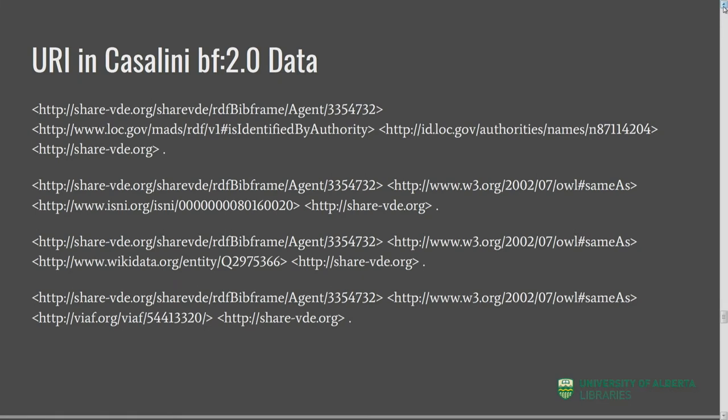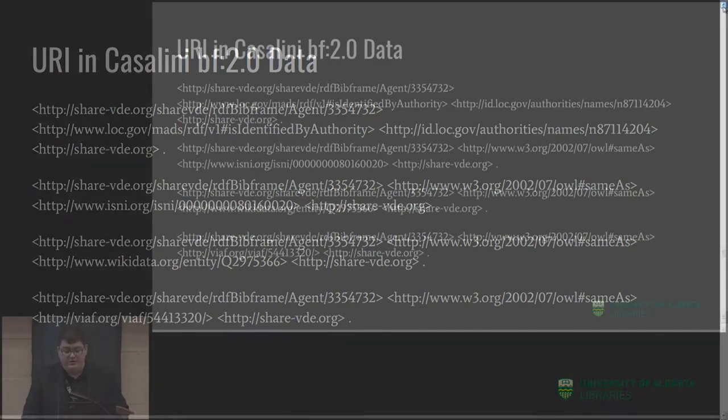URI in the Castellini BibFrame 2 data is rather interesting as well. They're making use of their own minted URIs to cluster information, and you'll also note that they're modeling other relationships within the data itself. You can see the use of OWL sameAs to pull together some of the different identifiers.